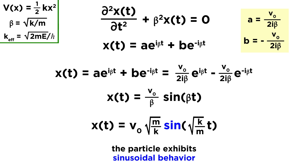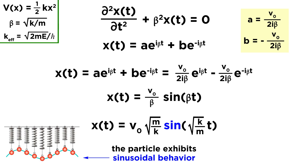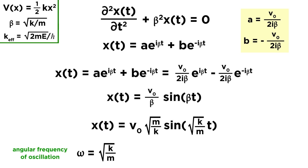Now we can get clever. We have used this Euler equation a few times by now, and we can recognize that it has the same form as the equation we currently have — we just have beta·t in place of theta. We just need this expression to be over 2i in order to make the substitution, so let's multiply by 2i over 2i. These ones cancel out, leaving us with V naught over beta, and then the other part we can now write as simply sine of beta·t. Finally, recall that beta represents root k over m, so let's change the betas back to their original form. With beta in the denominator, we simply invert the expression to write root m over k, and root k over m can be written into the sine term. And there we have our expression for x of t.